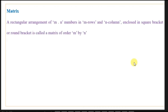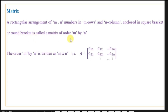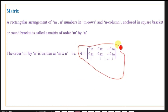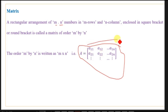First, we define what is meant by a matrix. A rectangular arrangement of MN numbers in M rows and N columns, enclosed in a square bracket or round bracket, is called a matrix of order M by N. The order is written as M cross N. By definition, it is an arrangement of MN elements, where M represents the rows and N represents the columns. This arrangement is called a rectangular array.